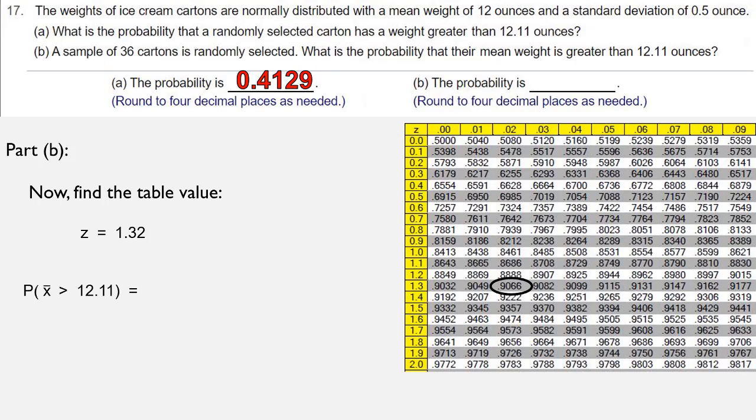Because our table value is 0.9066, and we're looking for a greater than area, greater than represents area to the right. Area to the right is found by 1 minus the table value. So this probability that x-bar is greater than 12.11 is 1 minus 0.9066. When we subtract, we get 0.0934. And that's your answer to part B.